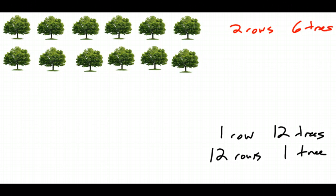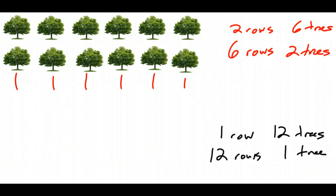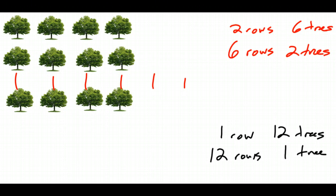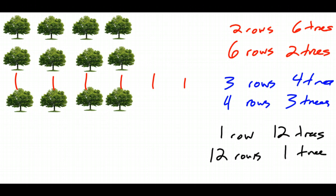Similarly, if we just flip the orientation, if we have six rows, then we are going to have two trees in each row. There is one more set of ways to split the trees: if we try to make three rows, we get three rows of four trees each, or four rows of three trees each. So these are all the ways we can split 12 trees into equal rows.